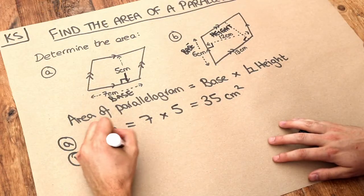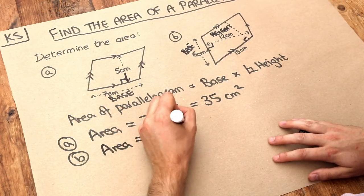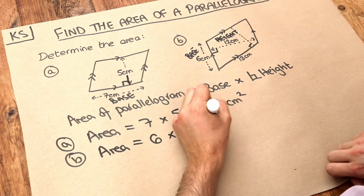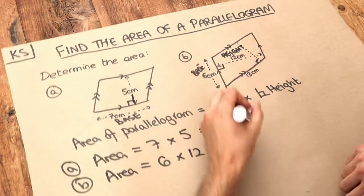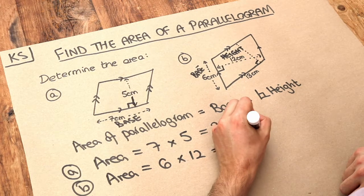So the area here is going to be 6 times 12, and that is 72. And again, because these are centimeters, it'll be centimeters squared.